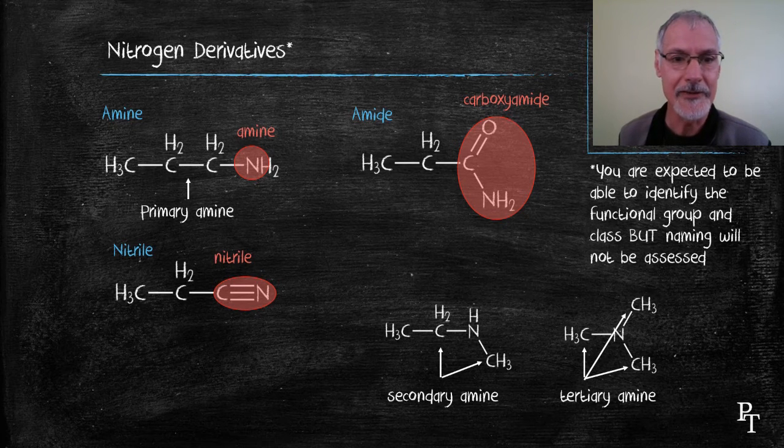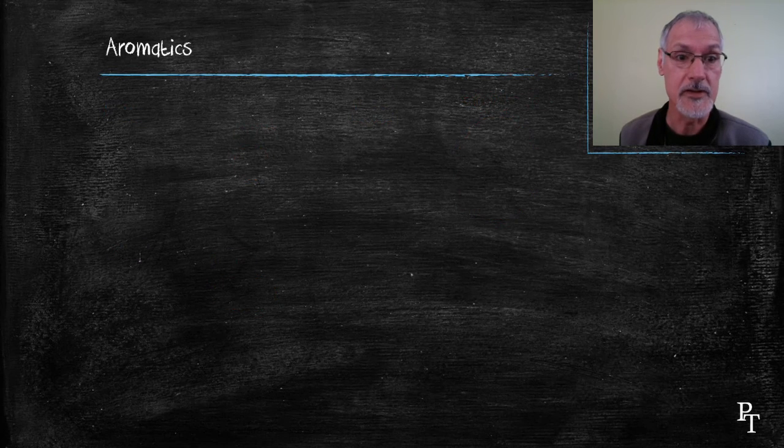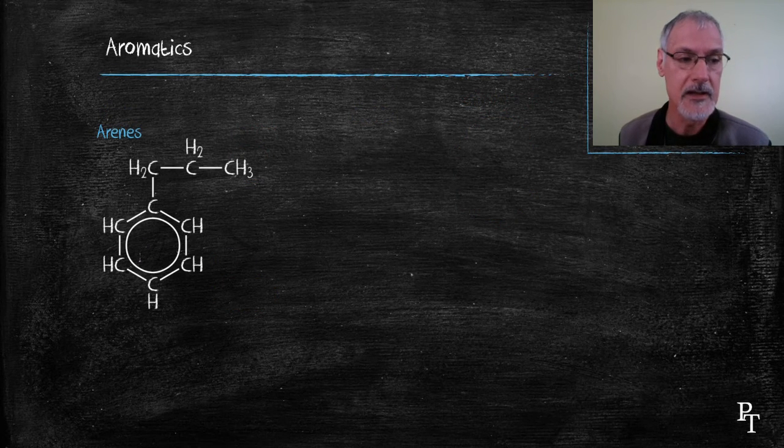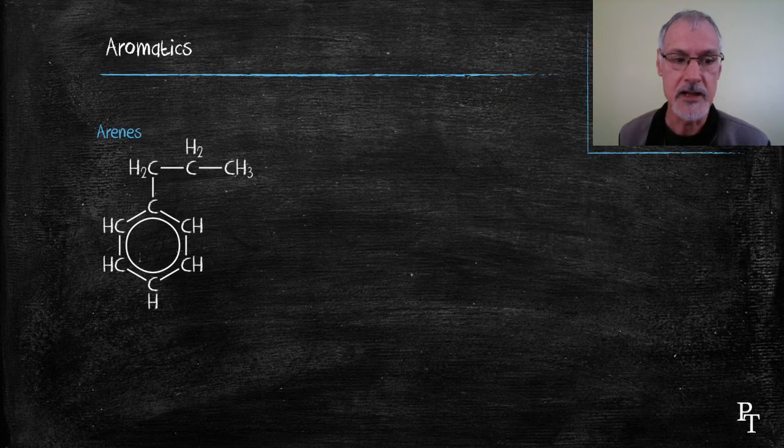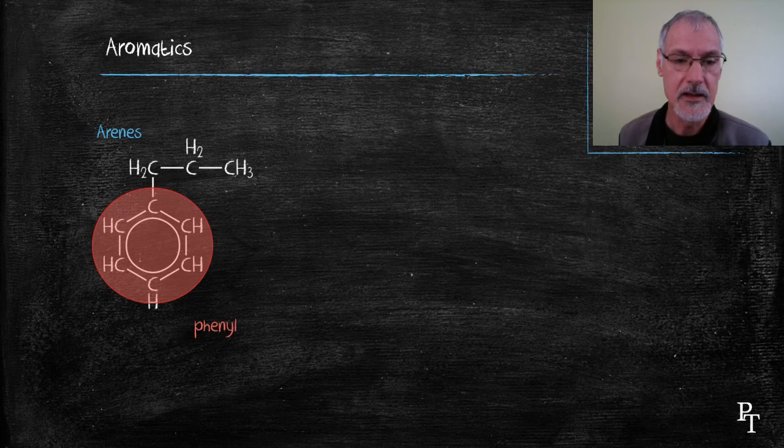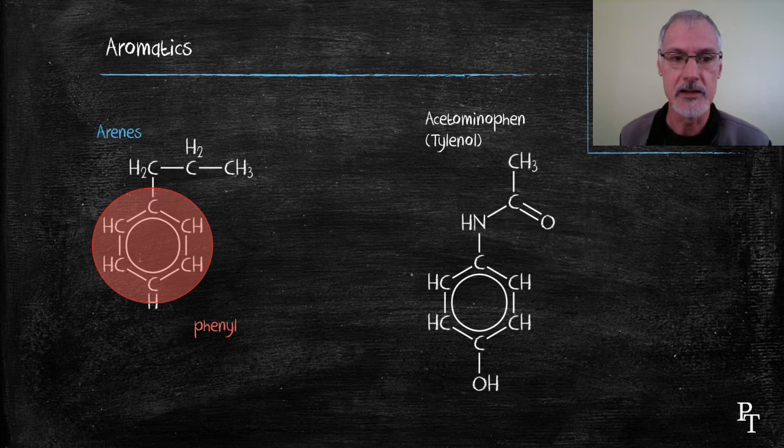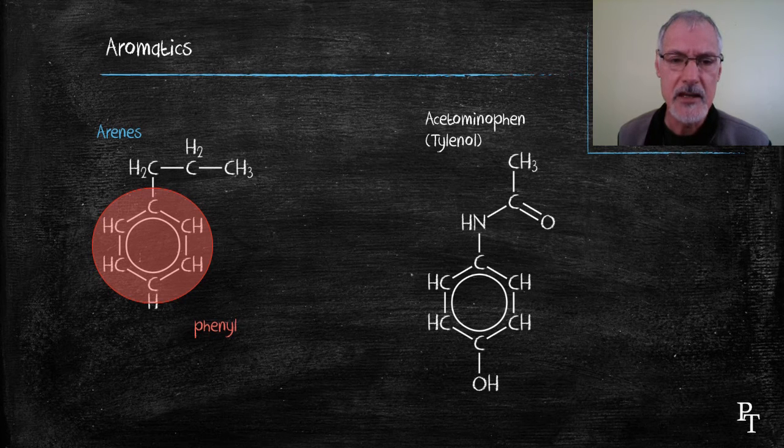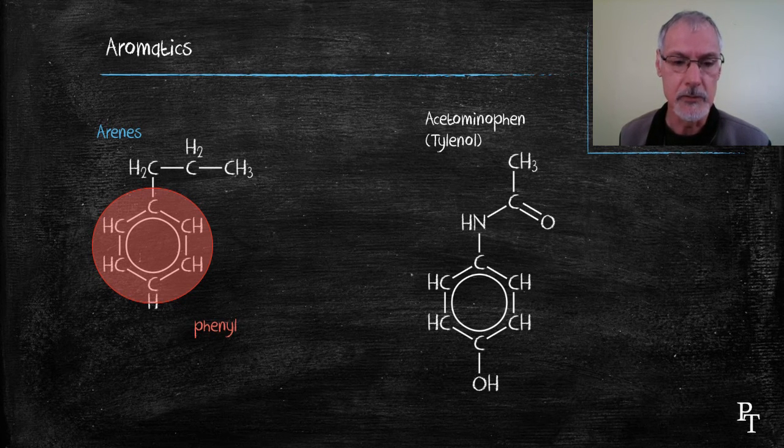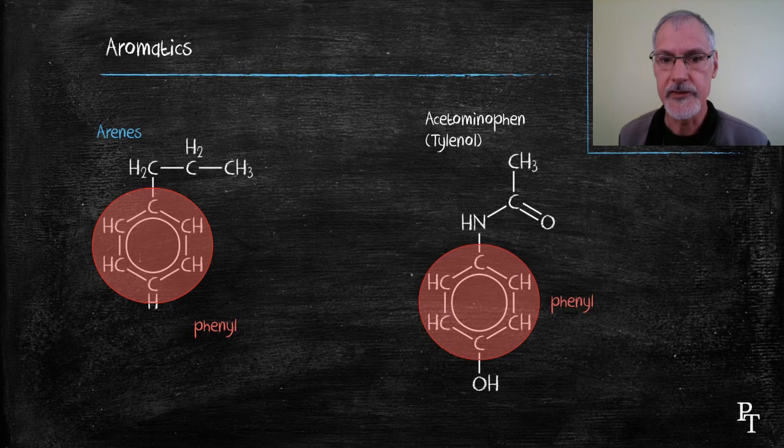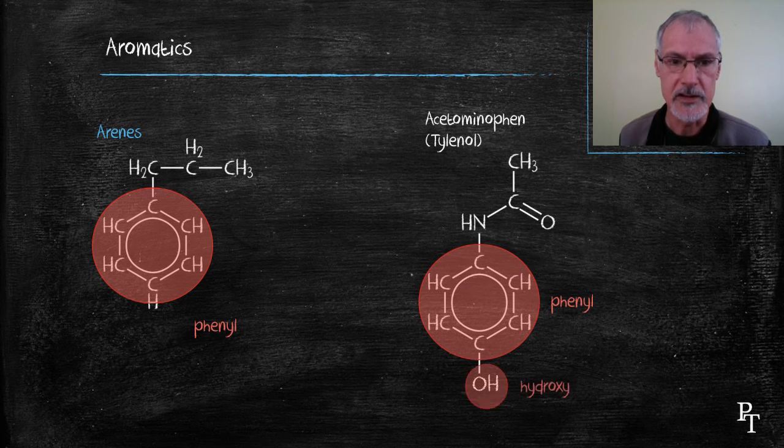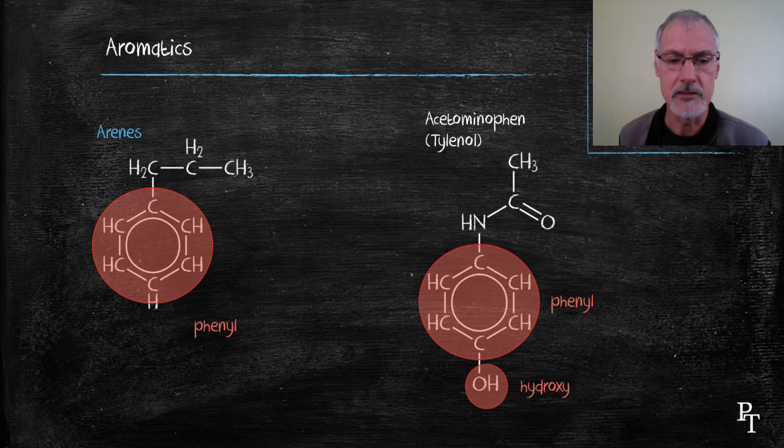And finally my aromatics which are parts of what they call the arene family and again identified by that ring which is I'd call the phenyl group. Now if we take a look at the molecule I had earlier, it comes from Tylenol as the active ingredient in Tylenol, acetaminophen, and let's just review some of the groups that we see in that molecule. So hopefully the ring, the phenyl group, stands out. The presence of that hydroxy group indicates perhaps this could be a member of the alcohol family and finally carboxyamide group.